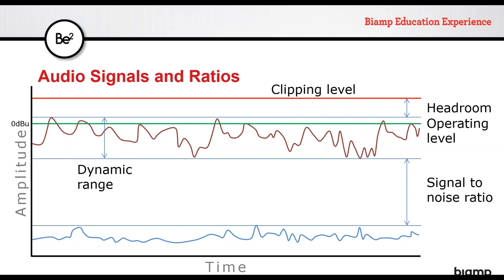Dynamic range is defined as the top peak and lowest valley of our operating speech or program audio inputs. Headroom gives us a little bit of operating room before we hit clipping level. We're managing the signal to hit our operating level, averaging around 0 dBU on our meters. We want enough signal range remaining above the RMS signal to avoid clipping, but we also don't want to come in too low and lose signal-to-noise ratio. We want that distance as far as possible while avoiding clipping.